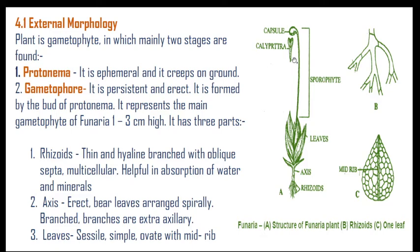Here is the complete external morphology of Funaria. These are the rhizoids, this is the axis (also called stem), and on that stem there is development of leaves. From those leaves there is emergence of the sporophyte, which has capsule and calyptra. The enlarged diagram of rhizoids shows oblique septa. The single leaf has a single midrib and these are the cells.